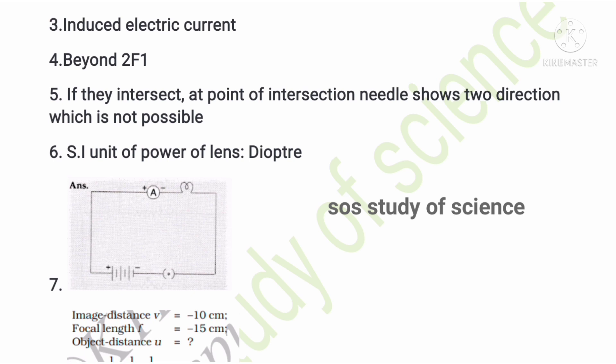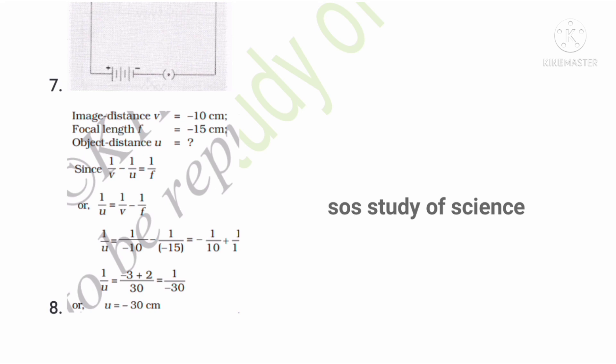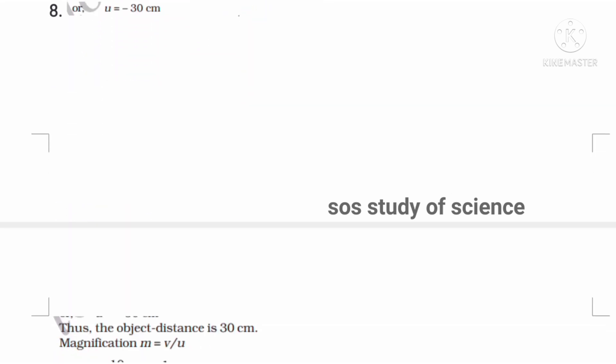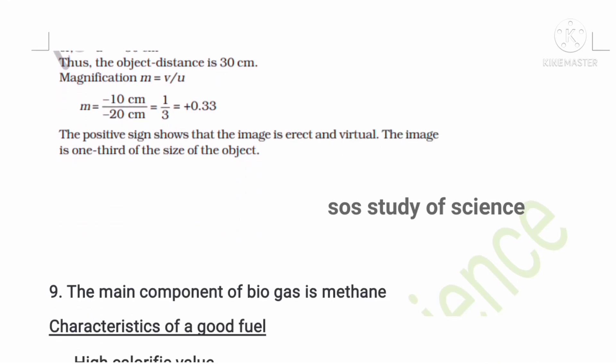The SI unit of power of a lens is the diopter. The next question asks for a schematic diagram of an electric circuit including an electric cell, electric bulb, ammeter, and plug key — you need to draw this diagram. For the eighth question, a concave lens has a focal length of 15 cm; you need to find the object distance, which comes out as u = −30 cm.